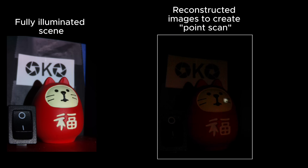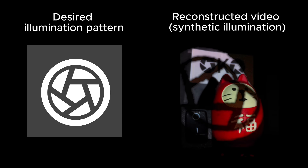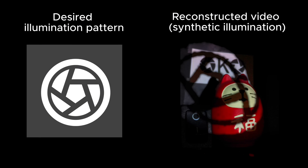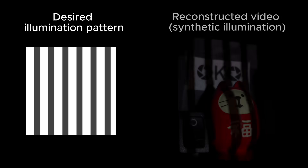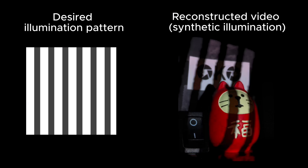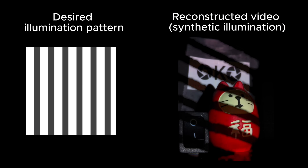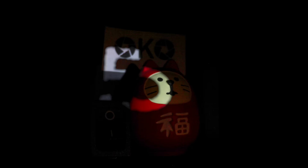Because we have the light transport information, we're actually free to synthetically illuminate the scene with any pattern. I just upload an image, resize it to the same illumination pattern dimensions, and then turn on the camera pixels that correspond to the illumination pixels in the pattern. I never illuminated the scene with any of these patterns that you're seeing, but we know the light transport between the projector and camera so we can construct these images. I can make videos with different illumination sequences, like this countdown.